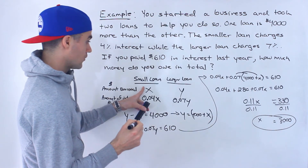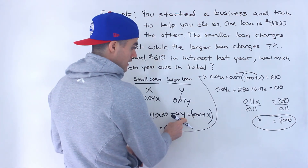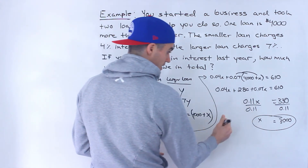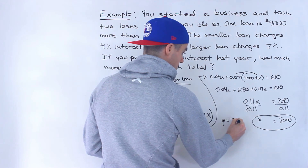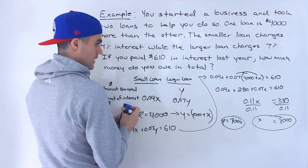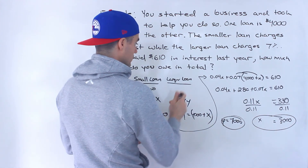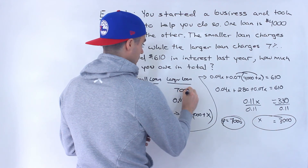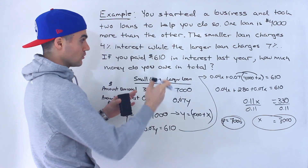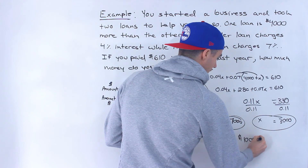So $3,000 is the amount we borrowed for the small loan. Then Y, the amount borrowed for the larger loan, is just 4,000 plus that 3,000, which is $7,000. Notice there's a $4,000 difference between them. So the total — they're asking how much do you owe in total — is $10,000.